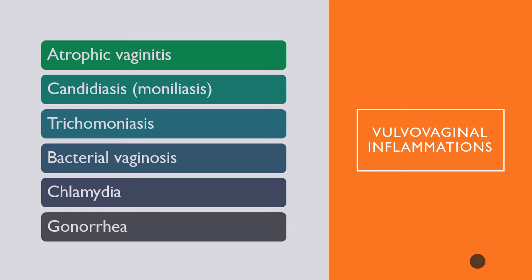Candidiasis (yeast infection) usually presents with a thick, white, clumpy discharge with a sour smell. Trichomoniasis presents with a yellow-green, very frothy, foul-smelling discharge, and on cervical exam there are petechiae internally on the cervix. Bacterial vaginosis—specifically Gardnerella—has a gray, drippy discharge that smells like fish, identified with a wet prep KOH slide.